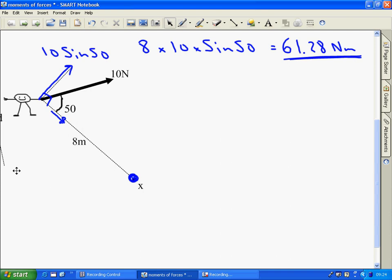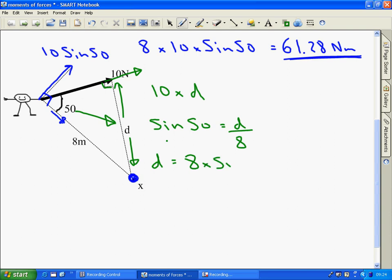Now what we could have done is find the perpendicular distance to that force. So we've got the force of 10 multiplied by the perpendicular distance D. To find D, use trig. The sine of 50 equals the opposite D over the hypotenuse 8, so D equals 8 times sine 50. So 10 times D becomes 10 times 8 times sine 50. Comparing these two, they are exactly the same. So it works both ways.